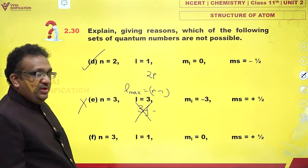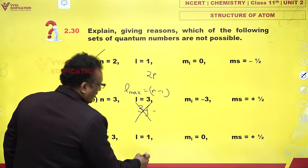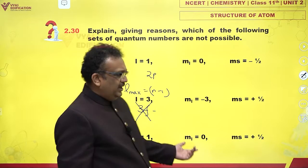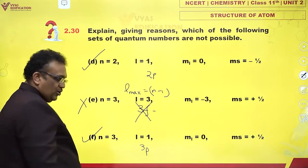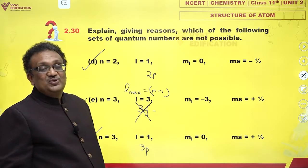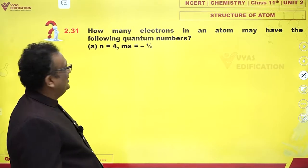n equals 3, l equals 1 means 3p orbitals. ml equals 0, okay. Spin can be plus half, minus half, anything. Is this possible? Yes. Alternate ones seem to be possible and impossible in this case.